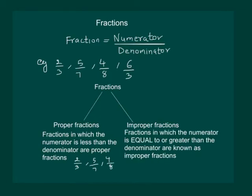Fractions in which the numerator is equal to or greater than the denominator are known as improper fractions. For example, 6 by 3 is an improper fraction, 7 by 7 will be an improper fraction, and 5 by 2 is an improper fraction.